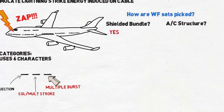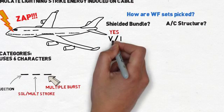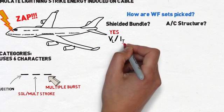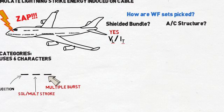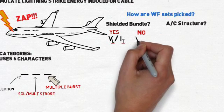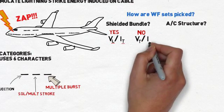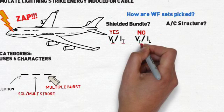If you have any shields in your bundle, you'll likely test to a shielded waveform set, meaning you'll have current waveform test levels and voltage limits. If you have unshielded bundles, it's just the opposite. You'll be testing to voltage waveforms, meaning voltage test levels and current limits.